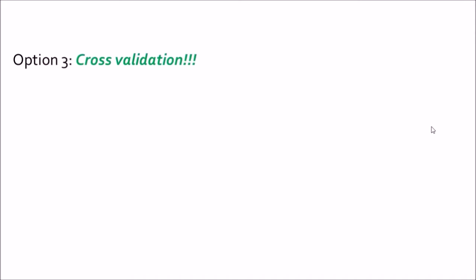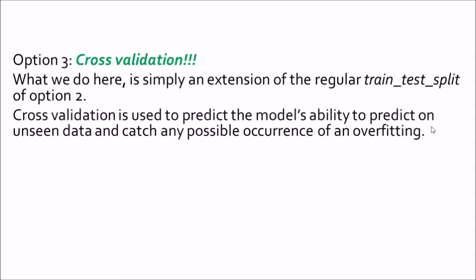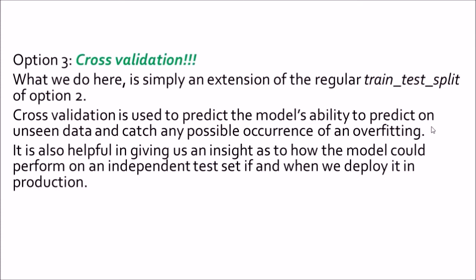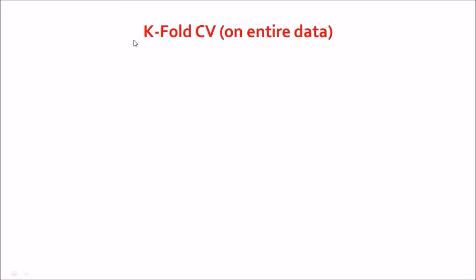Option 3 is cross-validation — and we are finally where this lecture was heading. Cross-validation is simply an extension of the regular train-test split from Option 2. It is used to predict the model's ability to predict on unseen data and catch any possible occurrence of overfitting. It also gives us insight into how the model could perform on an independent test set when deployed in production. We will first look at k-fold cross-validation.